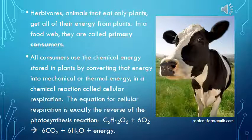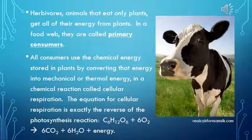Herbivores — animals that eat only plants — get all of their energy from plants. In a food web, they are called primary consumers. All consumers use the chemical energy stored in plants by converting it into mechanical or thermal energy through a process called cellular respiration. The equation for cellular respiration is exactly the reverse of photosynthesis: C₆H₁₂O₆ + 6O₂ → 6CO₂ + 6H₂O + energy.